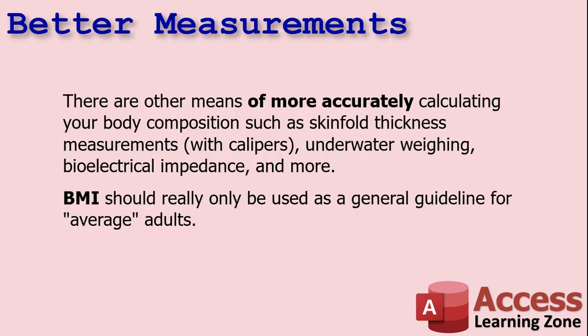There are definitely more accurate means of calculating your body composition, such as skin fold thickness testing with calipers. They can also do underwater weighing or bioelectrical impedance — lots of different ways to see how much of your body is fat versus muscle.